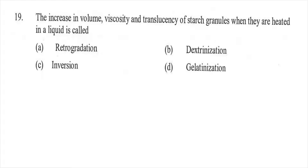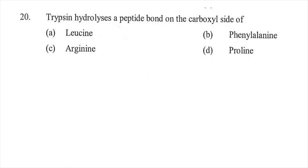Question nineteen: The increase in volume, viscosity, and translucency of starch granules when they are heated in a liquid is called — option A retrogradation, option B dextrinization, option C inversion, or option D gelatinization. The right answer is D, gelatinization.